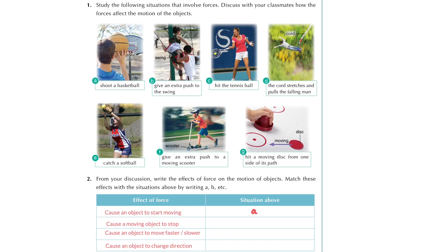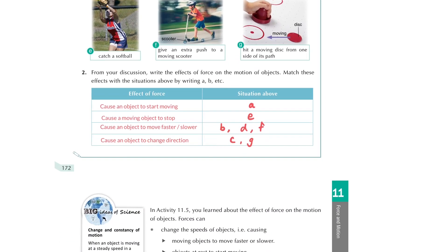So figure A represents the first effect: causing the ball to move. Figure E causes the object to stop. Figures B, D, and F show the force causing the object to move faster or slower. And C and G represent the force that changes the direction of an object.